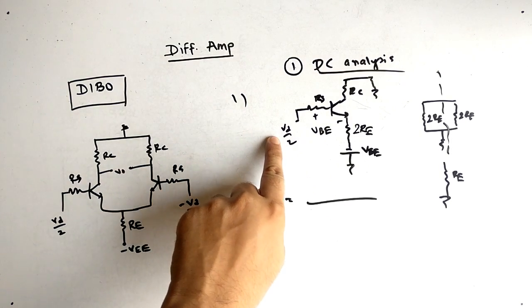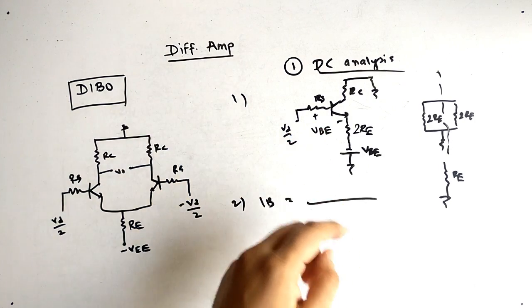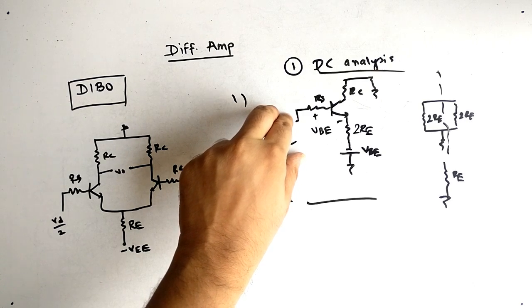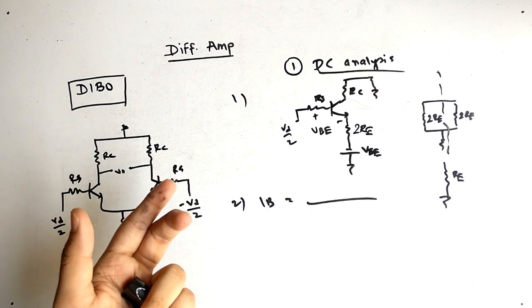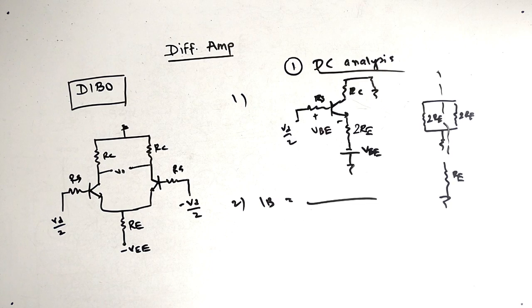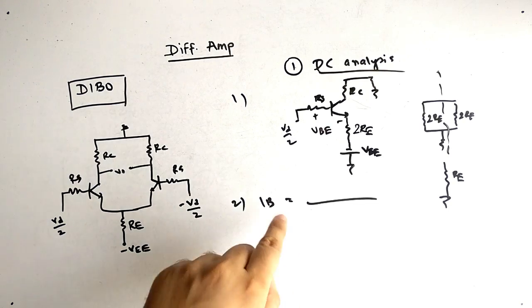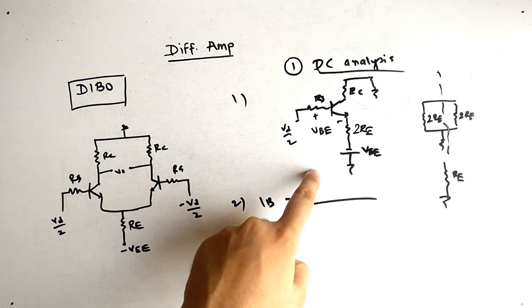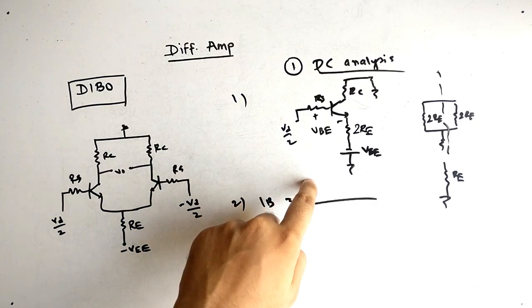Now you can note that the current flowing - I have one trick to find IB. Now basically you can apply KVL and find the answer. You have to note that this is the analog voltage, so while applying KVL this voltage will not be present. So apply KVL, you will get the value. I have some trick, better way to do this.